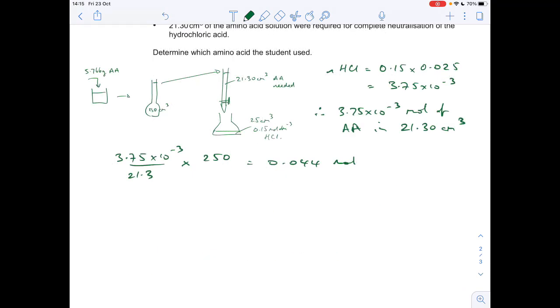So from that information we can work out the Mr of the amino acid. So Mr is mass over moles, so those 5.766 grams contain 0.044 moles.